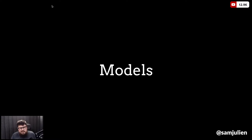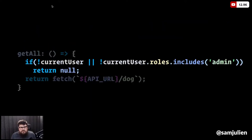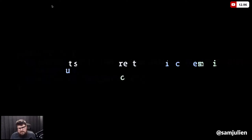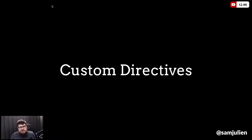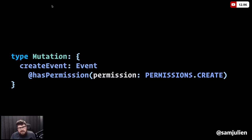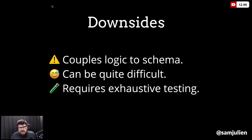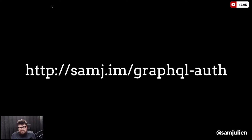We also talked about using models — sets of functions to read and write data — with a generate-model factory that takes in the user and defines functions that check for user roles before fetching from the API. And the last strategy was custom directives: building your own directive with a name, argument, and field location, then using it on mutations or queries to check if the user has the right permissions. Despite their power, custom directives couple logic to your schema, can be difficult to implement, and require exhaustive testing. All slides, references, resources, sample code, and libraries are available at samj.im/graphql-auth.